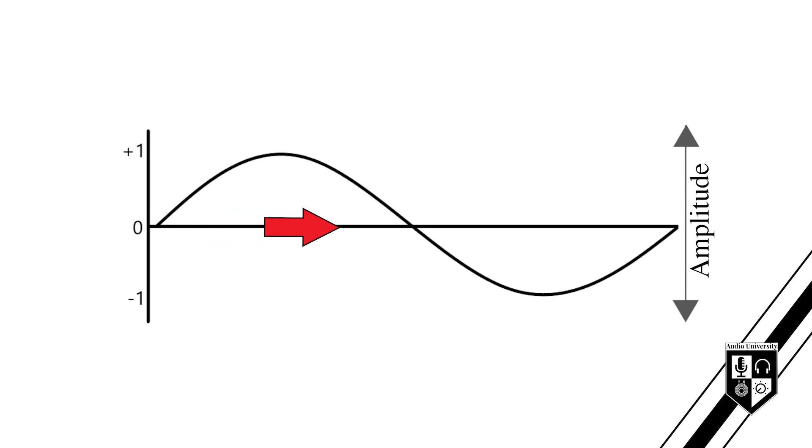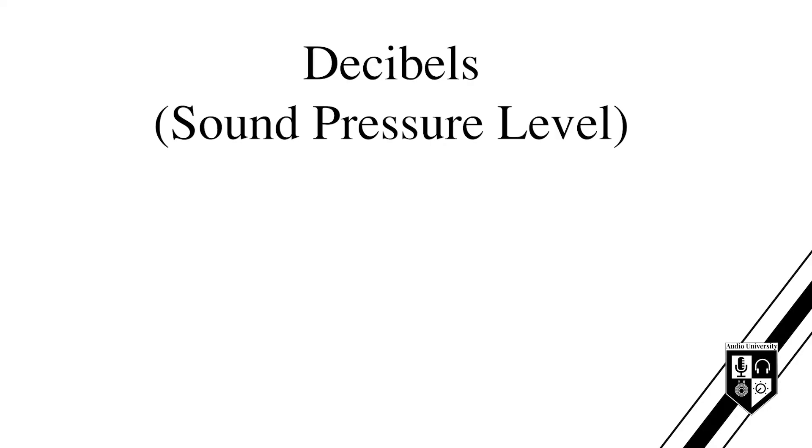Amplitude describes the extent of the pressure changes. Higher amplitude sounds have more extreme compression and rarefaction phases; lower amplitude sounds have less extreme pressure changes. The centerline of this graph represents zero amplitude, meaning normal air pressure. As the waveform travels further above or below the centerline, the amplitude grows. The unit of measurement to describe air pressure intensity or amplitude is the pascal. However, the huge range of amplitude that humans are capable of hearing makes the pascal very difficult to work with. For that reason, we use the decibel — more specifically, decibels of sound pressure level, or dBSPL.